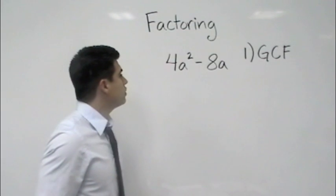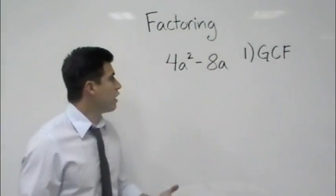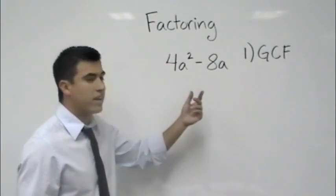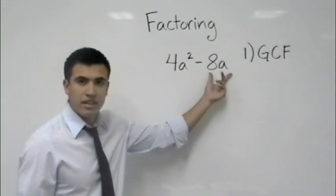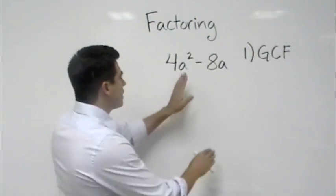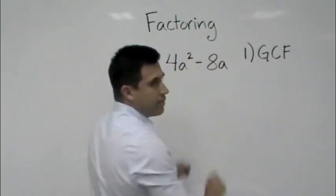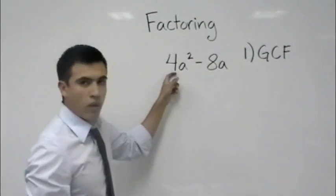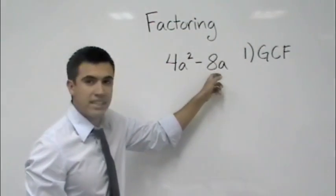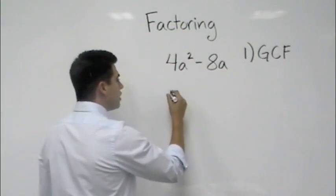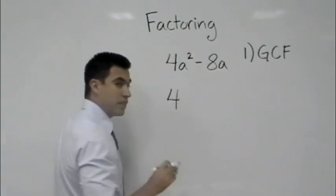We look at the two terms and ask ourselves what's the greatest common factor of 4a² and 8a. Well, first we want to look at the numbers, so let's cover those up. What's the greatest common factor of 4 and 8? Well, I know 4 goes into 4 and 4 also goes into 8, so my greatest common factor would be 4 for the numbers.